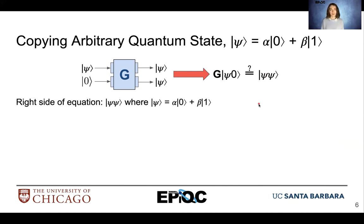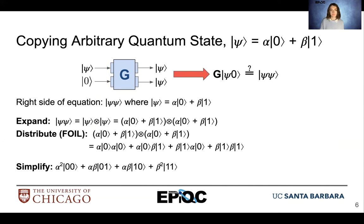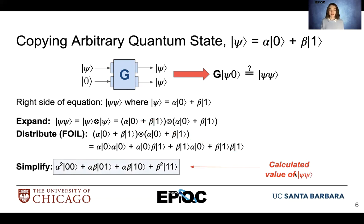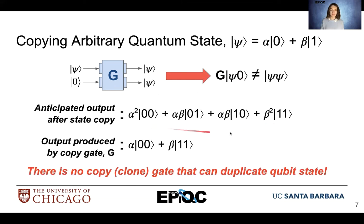Now let's look at the right-hand side of the equation. We have ket psi tensor ket psi — psi combined with a tensor product in superposition. We expand the tensor product, distribute using FOIL, and simplify. This gives us the calculated value of ket psi psi — what we would expect if we truly copied the state of psi. We see that g applied to ket psi 0 is not equal to ket psi psi. The anticipated state has all four basis states, but the output produced by our copy gate was just alpha ket 00 plus beta ket 11.